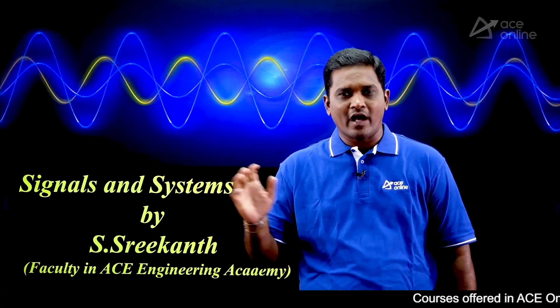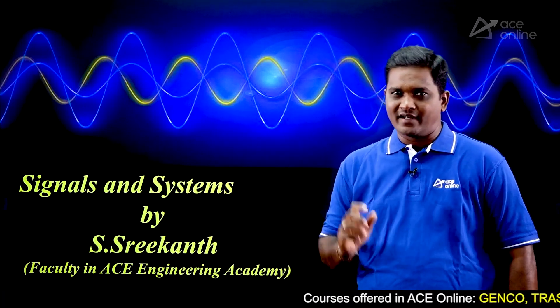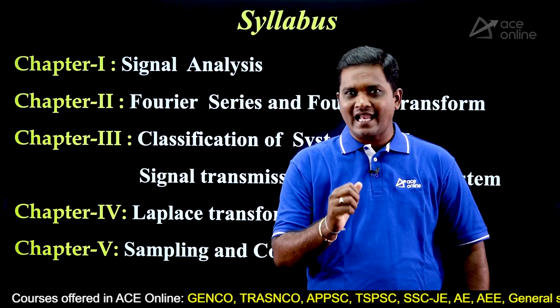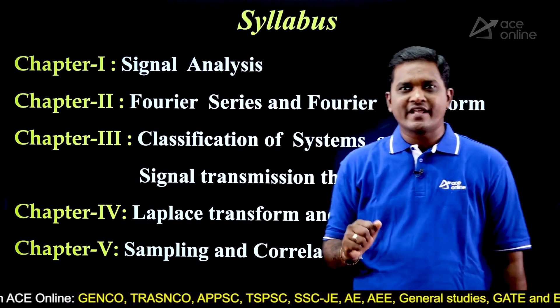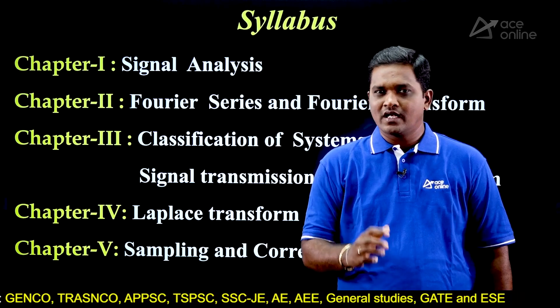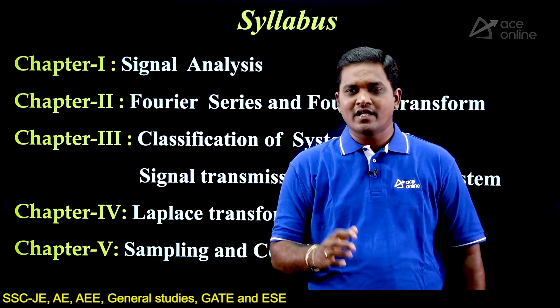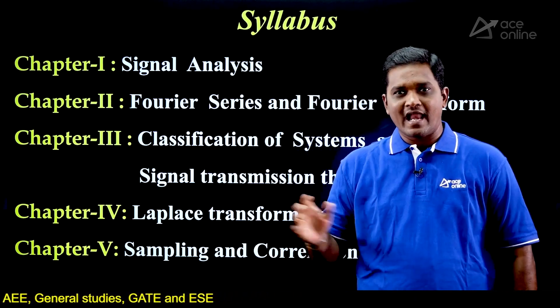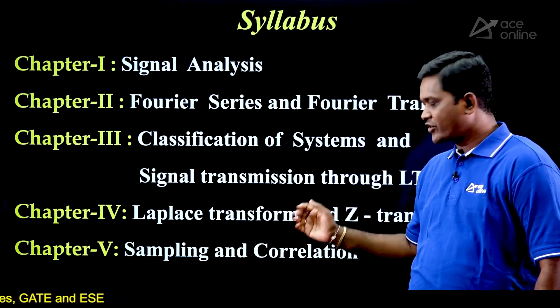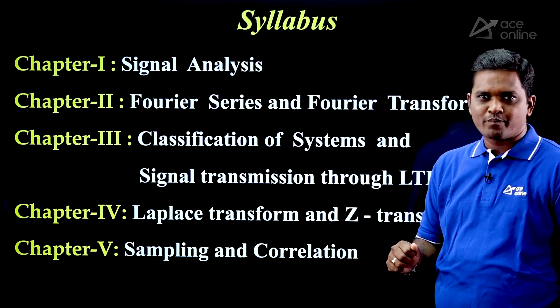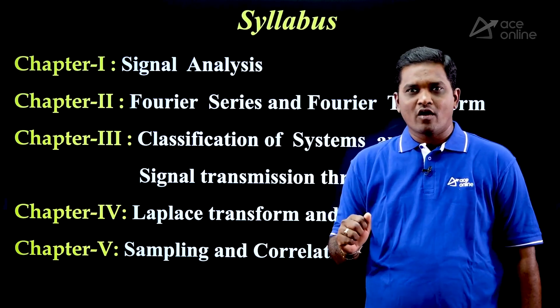We have gone through the syllabus of several state and deemed universities and arrived at a unique syllabus. Now let us see what syllabus I have covered in this course. The syllabus is divided into five chapters: Chapter 1 is Signal Analysis, Chapter 2 is Fourier Series and Fourier Transform, Chapter 3 is Classification of Systems and Signal Transmission through LTI Systems, Chapter 4 is Laplace Transform and Z-Transform, and Chapter 5 is Sampling and Correlation.